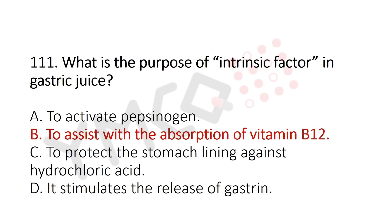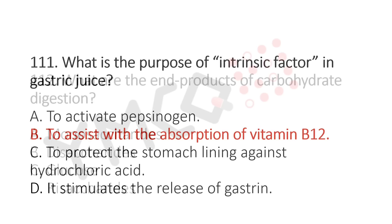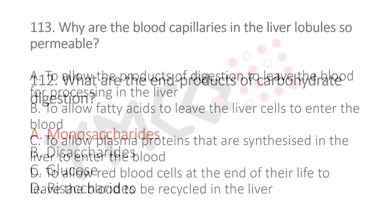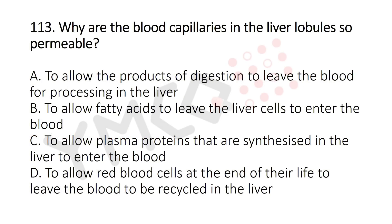Now Question 112: What are the end products of carbohydrate digestion? Option A: monosaccharides, Option B: disaccharides, Option C: glucose, Option D: trisaccharides. The answer is Option A: monosaccharides.